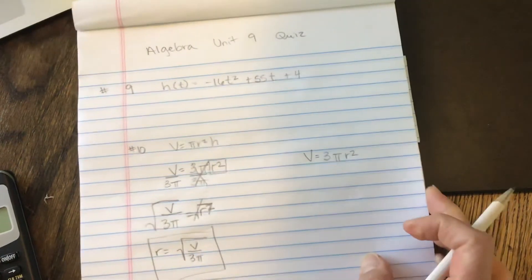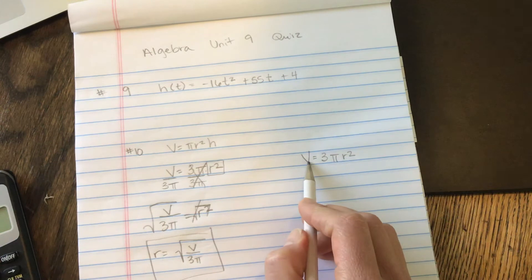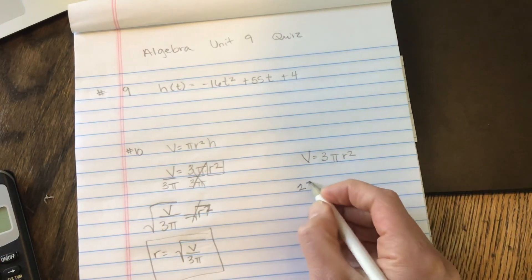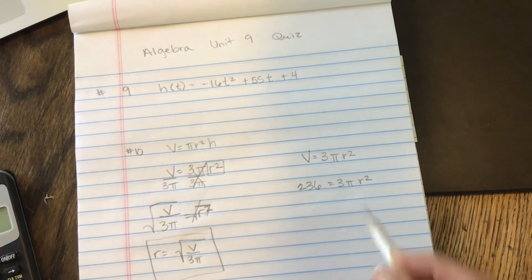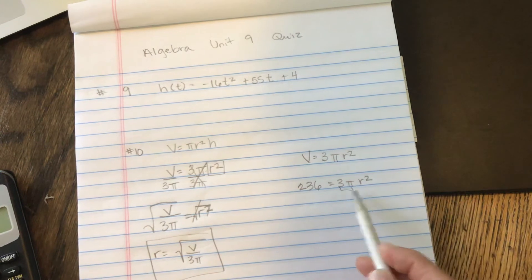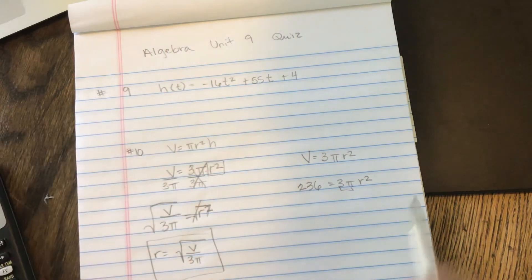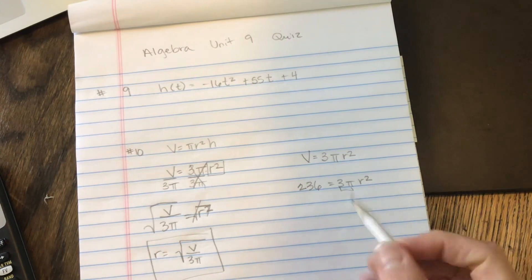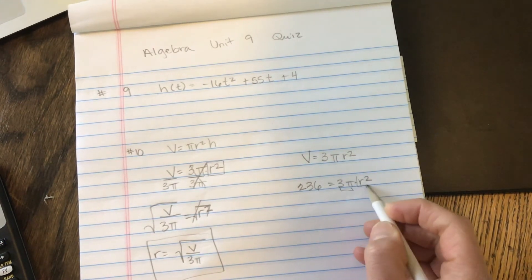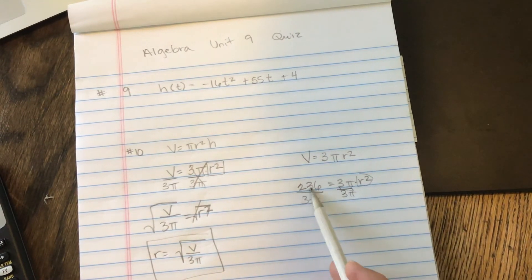And over here, it says if your volume is 236. So instead of writing V, we're going to use 236. 236 equals 3πR squared. Again, this is a number and you can just enter that directly into your calculator. I left my calculator at school and had to borrow my husband's old school one. So I multiplied those and used 9.42. But again, I want to solve for R. So I divide by 3π. I'm dividing by 3π. So you can enter 236 divided by 3π.